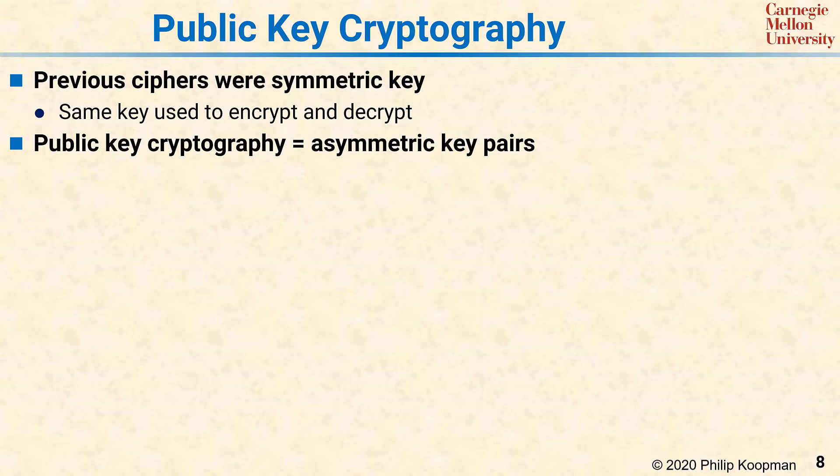To get around that problem, you can use public key cryptography. Public key cryptography uses asymmetric key pairs, which means the sender and the receiver have different cryptographic keys. You can't use any old key — you have to use specially constructed keys.